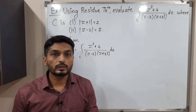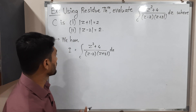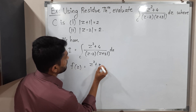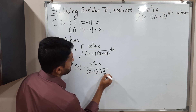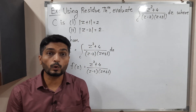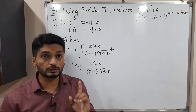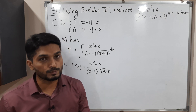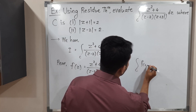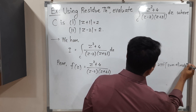This is the given integral. Let us note down the function — that is very important. Whatever is inside the integration, that is our function. So let us call it f(z), where f(z) = (z² + 4) / ((z − 2)(z + 3i)). They have said to use the Residue Theorem — Cauchy's Residue Theorem — to find the value of this integration. According to Cauchy's Residue Theorem, the value of the integral over C of f(z) dz is 2πi times the sum of residues.